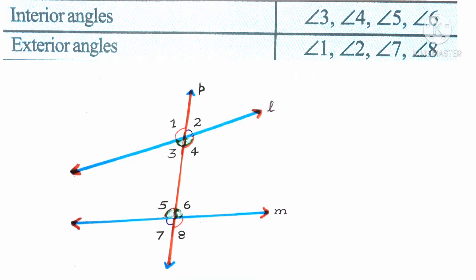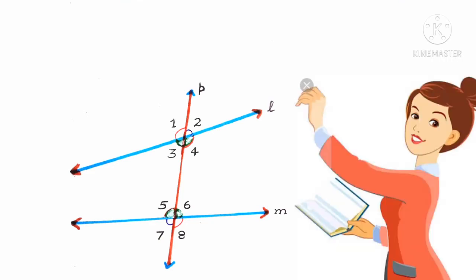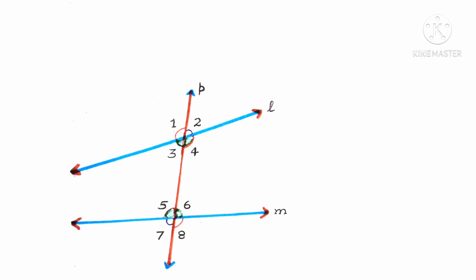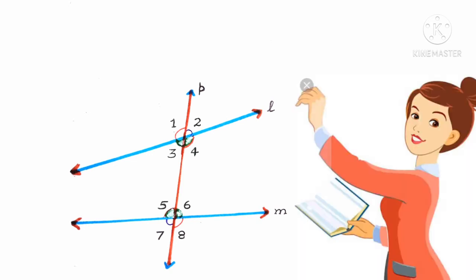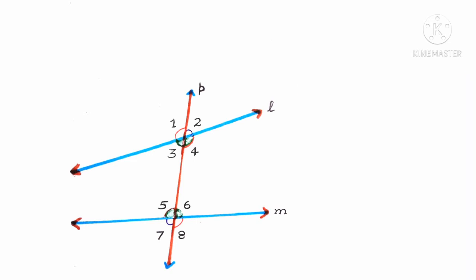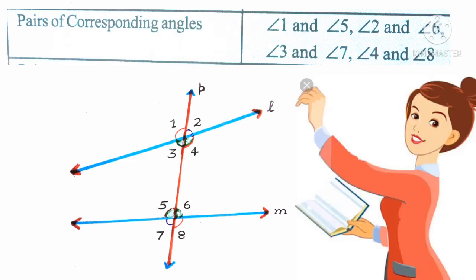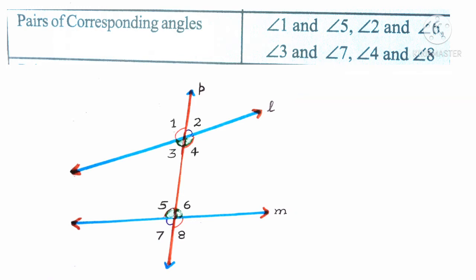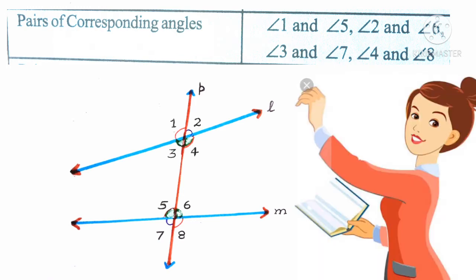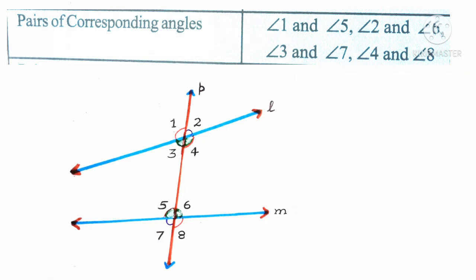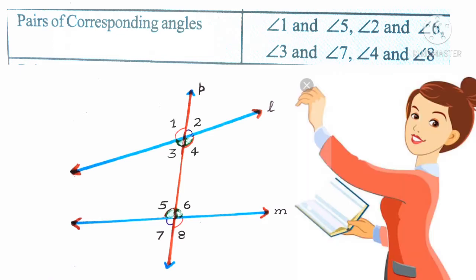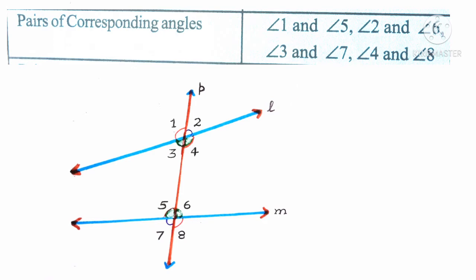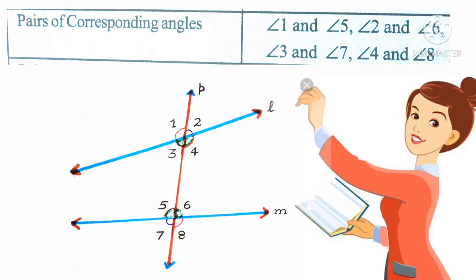Pairs of corresponding angles. Transversal P intersects line L and line M and eight angles are formed. Angles 1, 3, 5 and 7 lie to the left of the transversal. Angles 2, 4, 6 and 8 lie to the right of the transversal. Angle 2 and angle 6 are in corresponding position and these angles lie above the line. They are to the same side of the transversal. Angle 4 and angle 8 are in corresponding position. These angles lie below the line. They are formed on the same side of the transversal but they have different vertices.